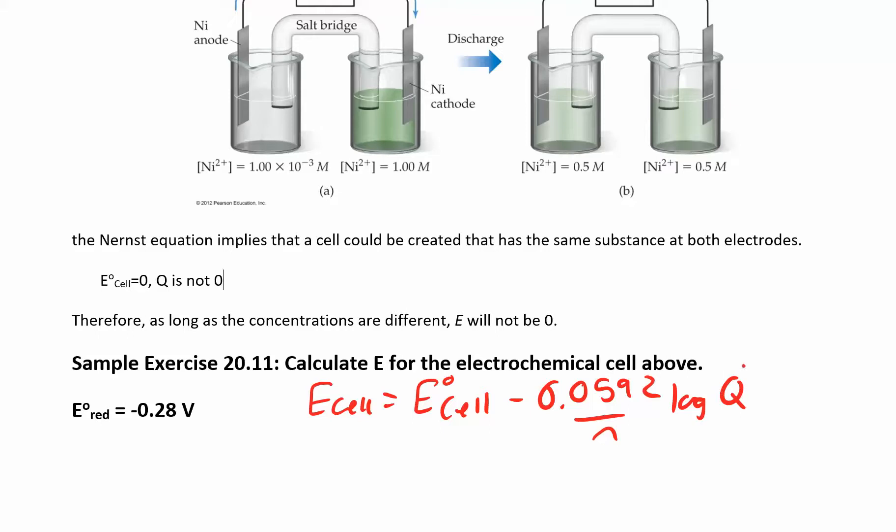And so because of this concentration difference because of the Q, you actually get a, you can register a difference in cell potential. So let's try to calculate that for this picture. Now Q is going to change over the course of the reaction. As the reaction proceeds, eventually these concentrations are going to be equal, and then the potential difference will no longer exist. But let's try to calculate it when we have it over here.